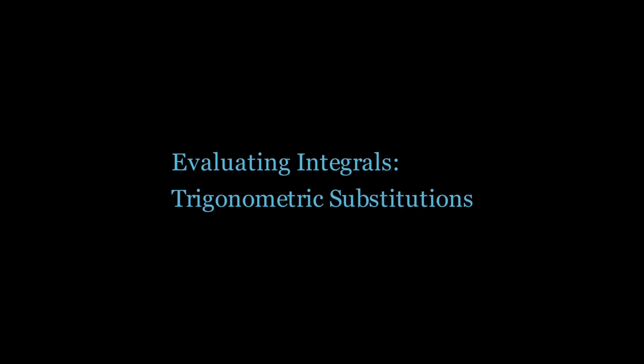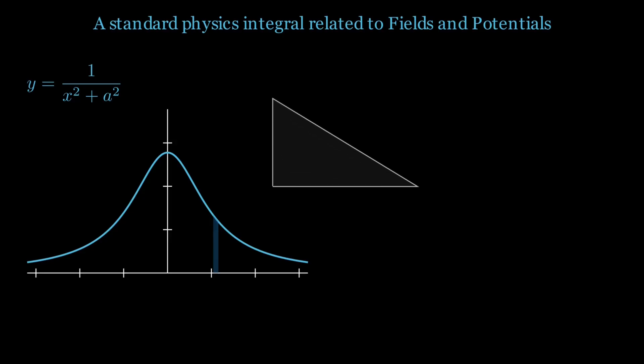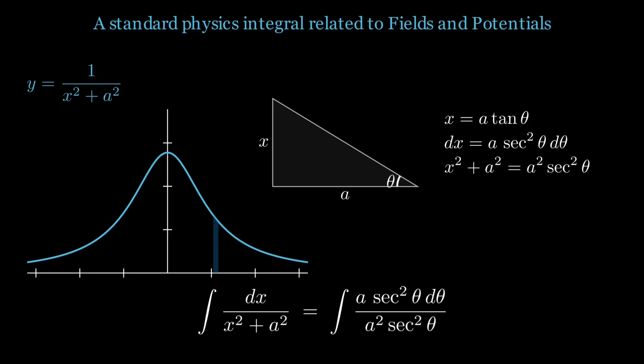Now let's look at some examples which show trigonometric substitutions. A common shape in field and potential problems is the inverse quadratic form 1 over x squared plus a squared. Picture it as a right triangle where the horizontal length a is associated with an angle theta.